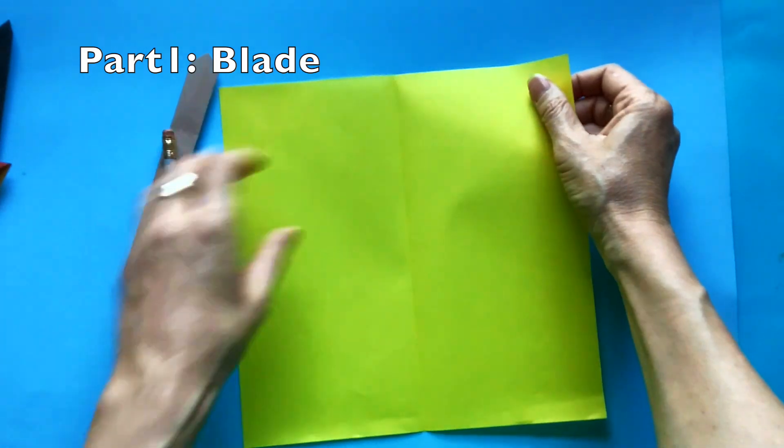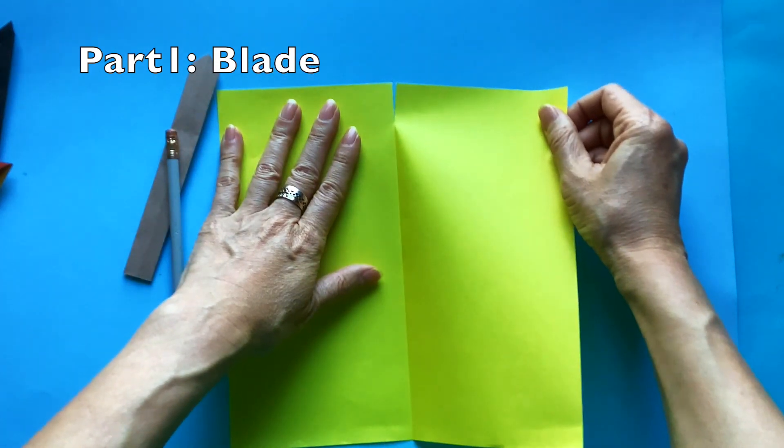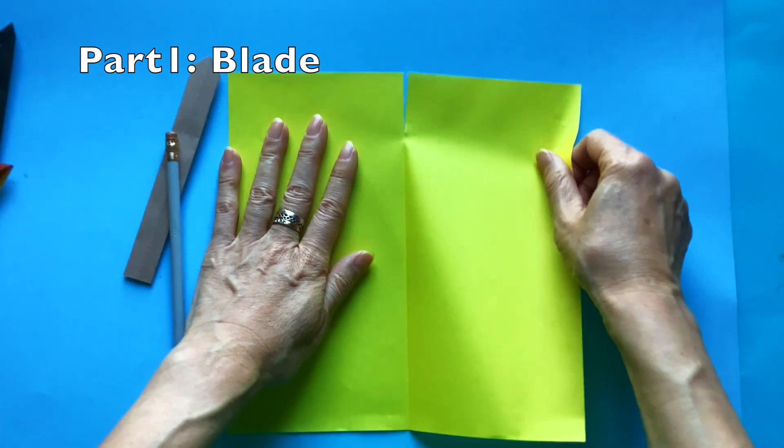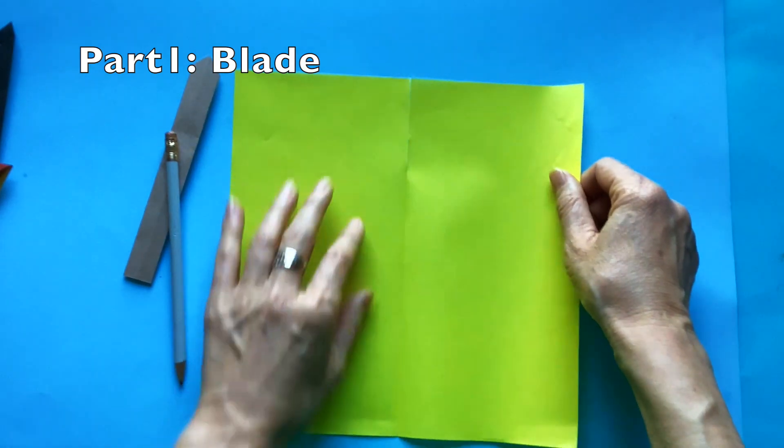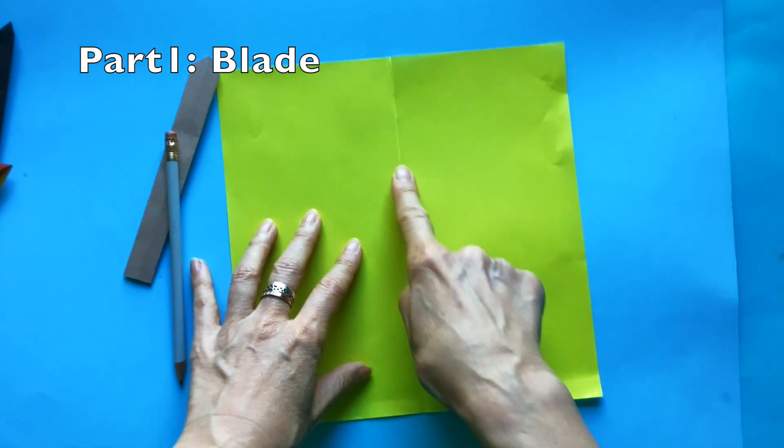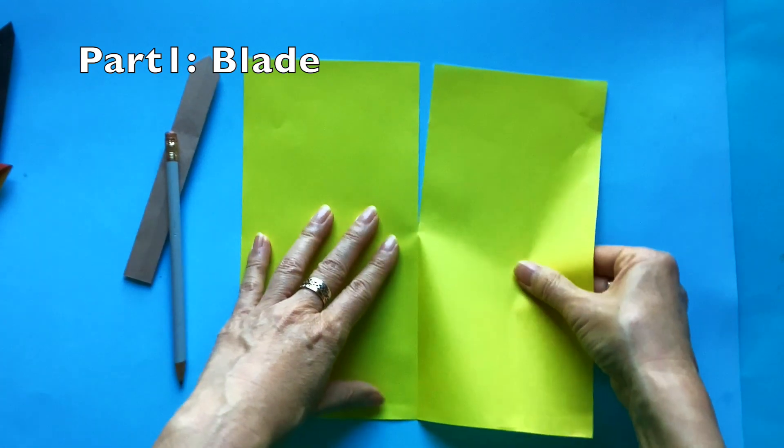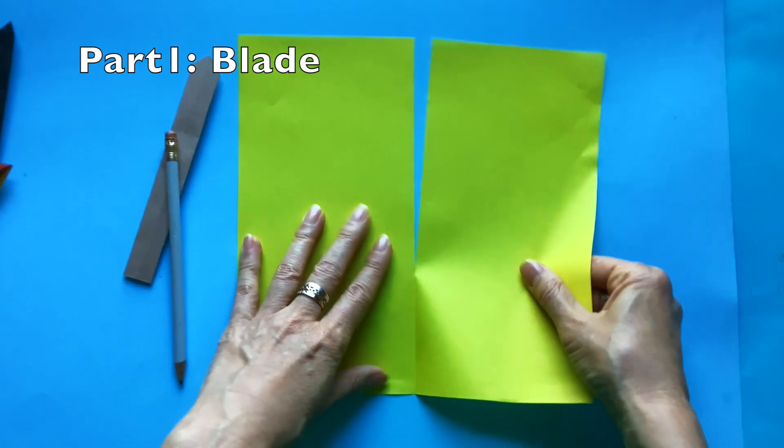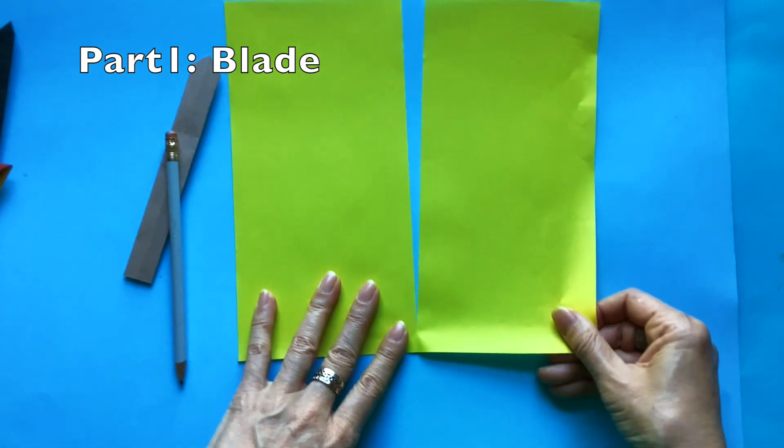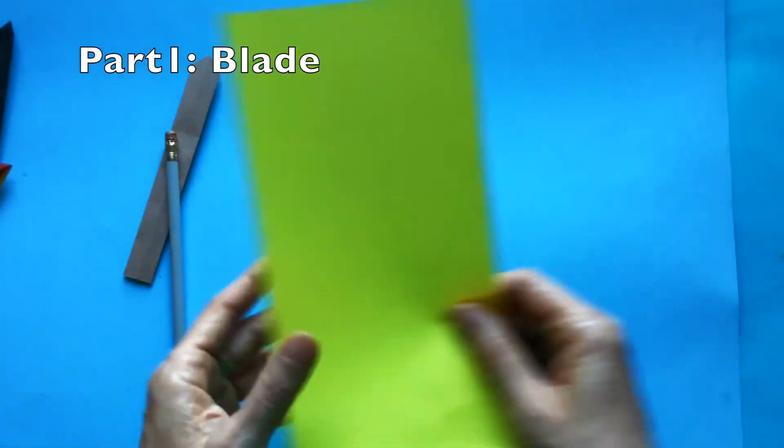If you have scissors handy just go ahead and cut in half on that creasing line, but I'm trying to do without scissors. In the middle put your finger on it and just start to rip a little bit, little by little patiently. You can put moisture like a drip of water and if you wet it the paper is easier to rip, but I'm going to do it dry. Put one sheet aside, you don't need this anymore, just one half piece for the blade.